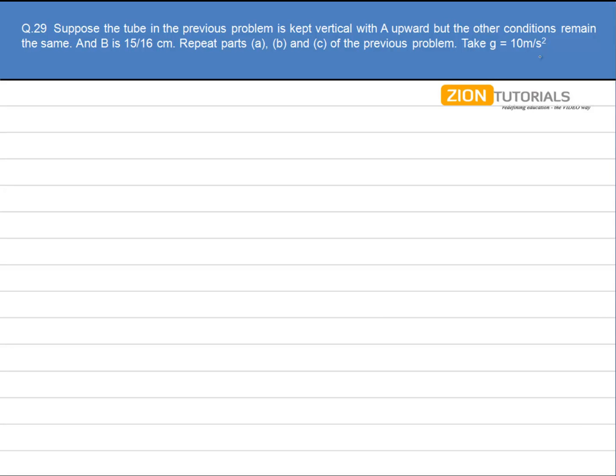Suppose the tube in the previous problem is kept vertical with A upward but the other conditions remain the same. The distance between A and B is 15 by 16 cm. Now repeat parts A, B, and C for the previous problem.